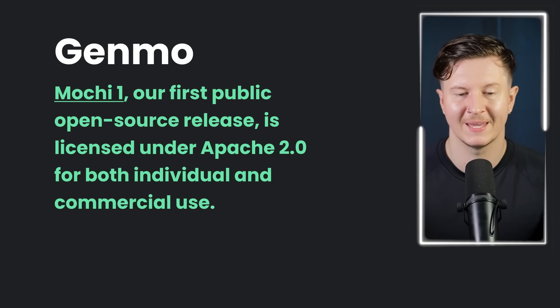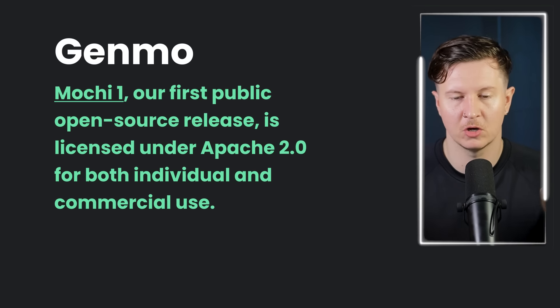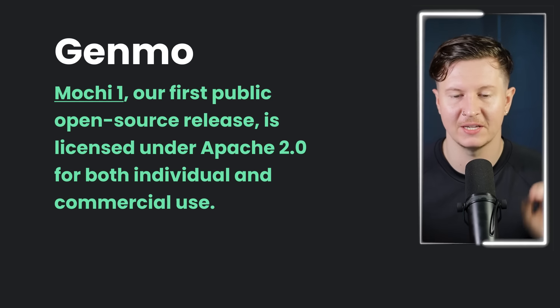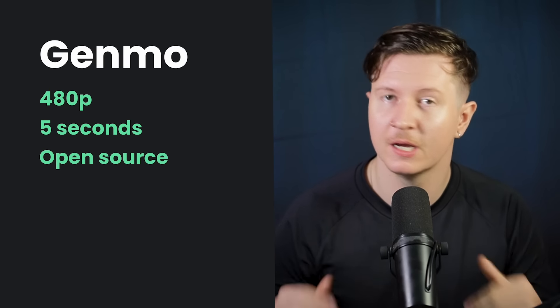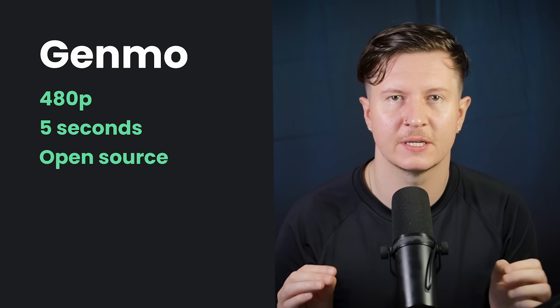This model is called Mochi 1 and they say it's their first public open source release. It's licensed under Apache 2 for both individual and commercial use — an extremely permissible license allowing users to freely modify, distribute and commercialize their creations. Currently it generates video at 480p, though you can upscale using an AI upscaler. It generates videos at five seconds long, and best of all it's open source so you can download and run it on your own machine, or run it online in the cloud.